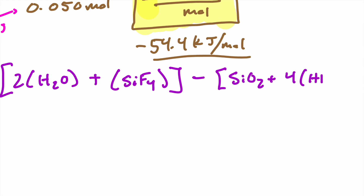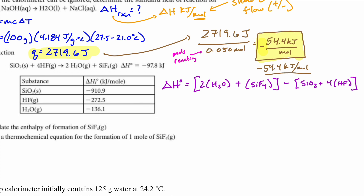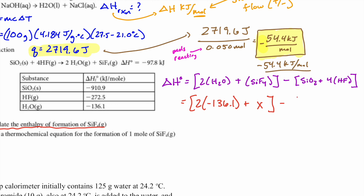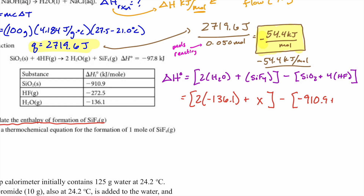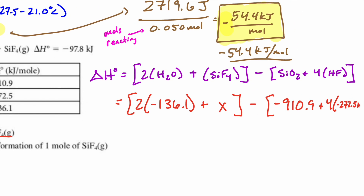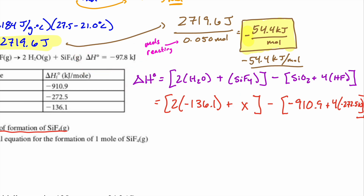I have ΔHf(H₂O) = −136.1, ΔHf(SiF₄) = x (unknown), ΔHf(SiO₂) = −910, and ΔHf(HF) = −272.5 kJ/mol. Since the problem tells me the overall reaction enthalpy is −7097.8 kJ, I now have one equation with one unknown and can solve for x.